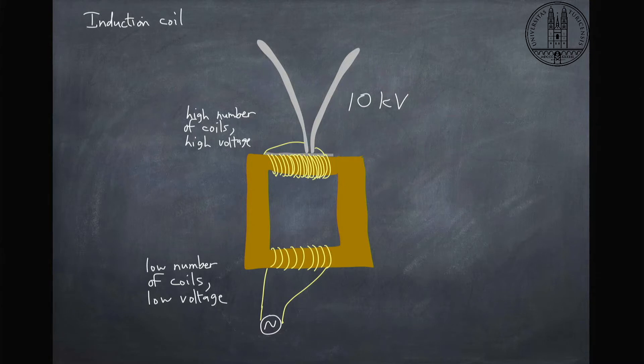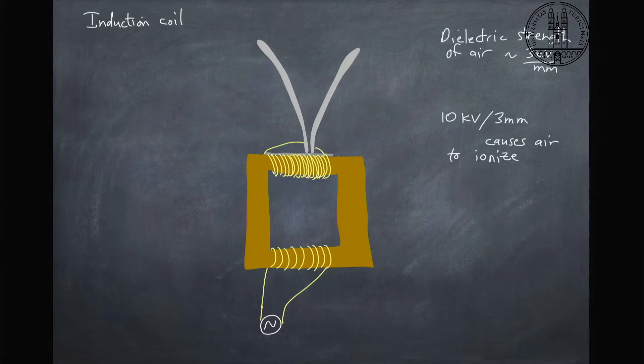What's going to happen here is that air has a certain dielectric strength of three kilovolts per millimeter. We've got 10 kilovolts here and about three millimeters of space. This is enough of a voltage, enough of an electric field to ionize the air, and ionizing the air means the electrons are stripped from the air.